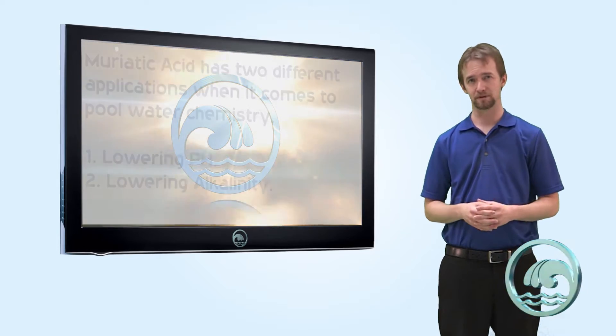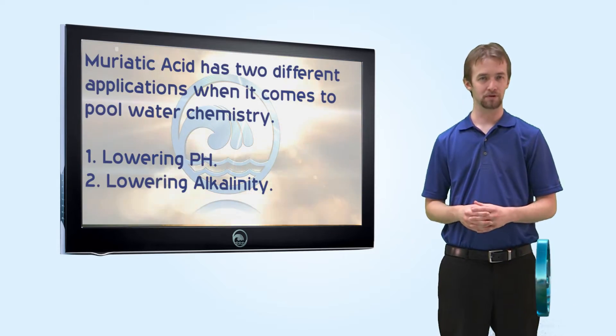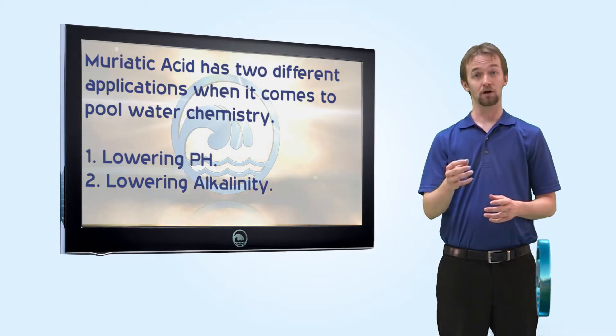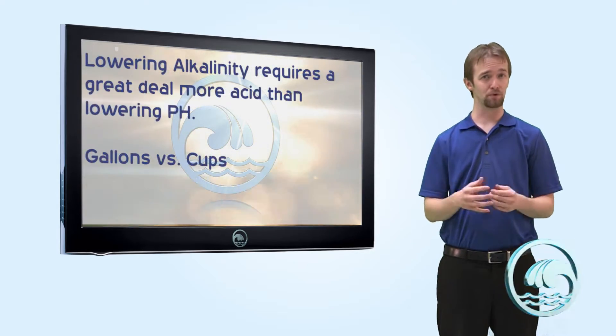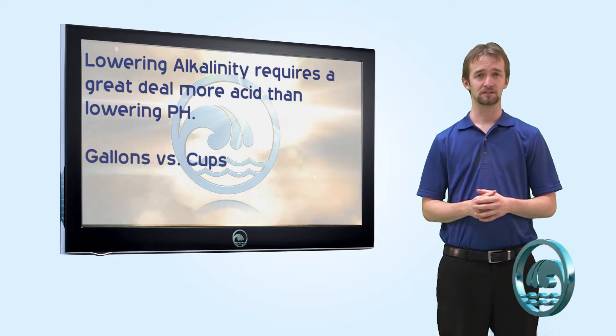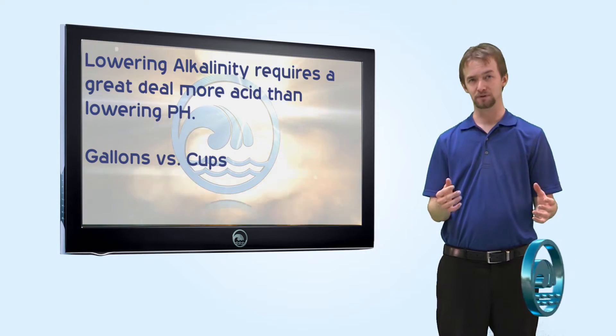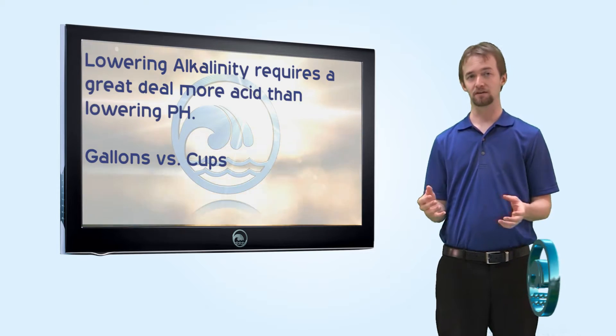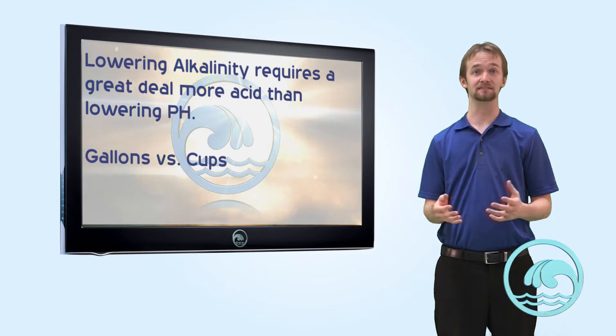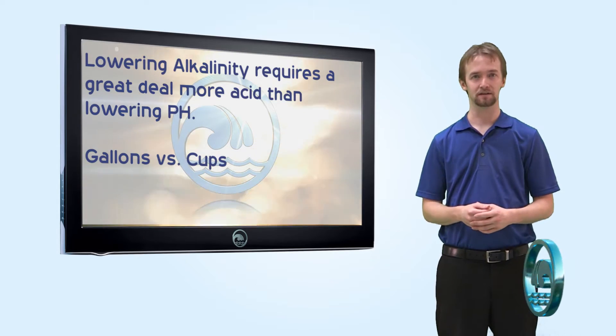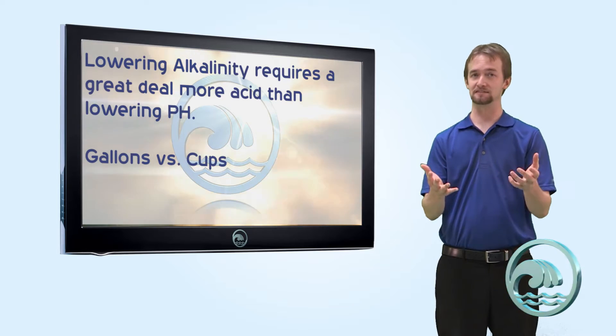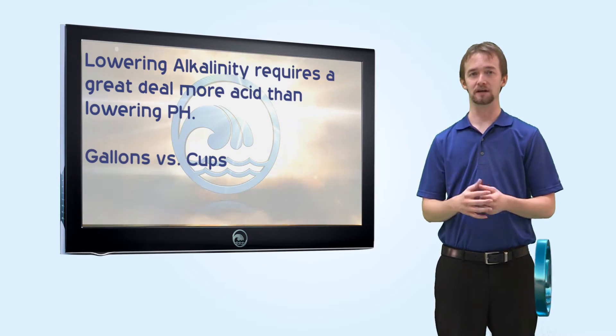There are two different applications for muriatic acid in your pool. The first is for lowering pH. The other is to lower alkalinity. Lowering your alkalinity requires way more acid than lowering your pH. You probably use between two to six cups of acid to lower your pH, but if your alkalinity is too high, you use between one and three gallons at a time to lower the alkalinity. So there's two different ways that you add it. Let's start with the pH as this is the most common use for muriatic acid.